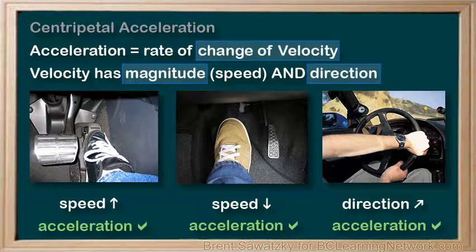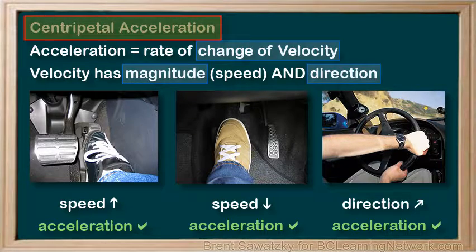We call this type of acceleration centripetal acceleration. An object moving in a circular path at a constant speed will experience centripetal acceleration.